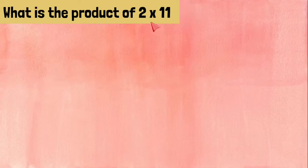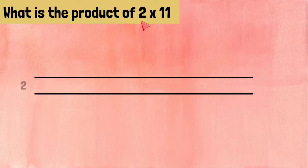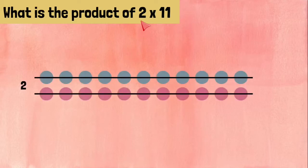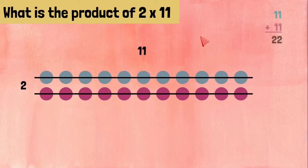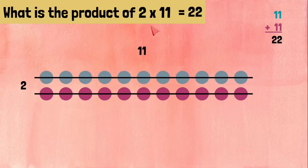2 times 11. We need two rows with 11 counters on each row. Now if we add 11 plus 11 we get 22. 2 times 11 equals 22.